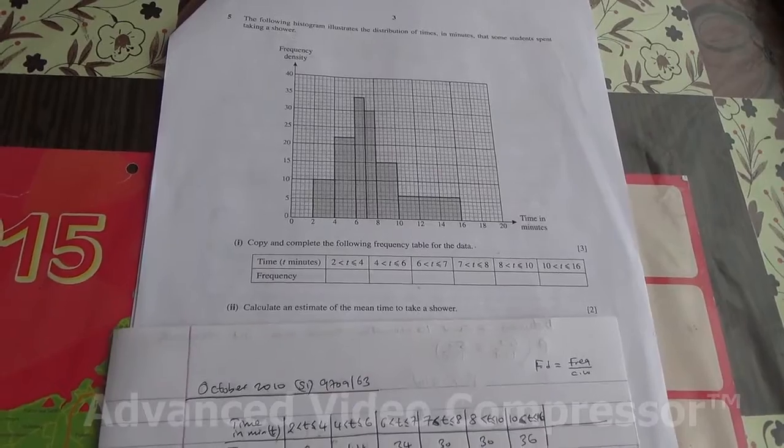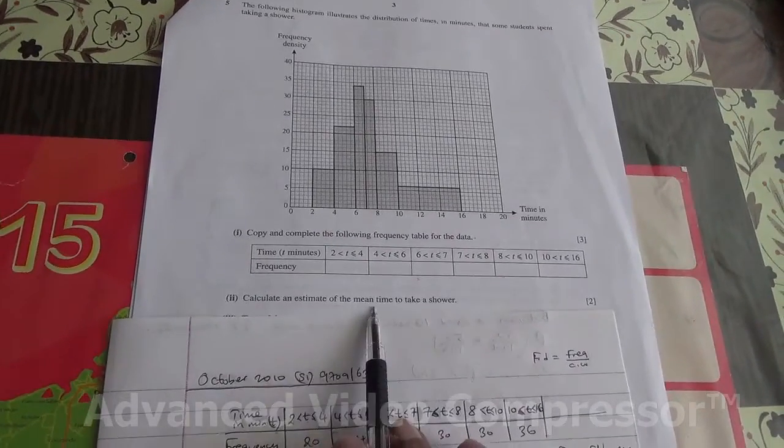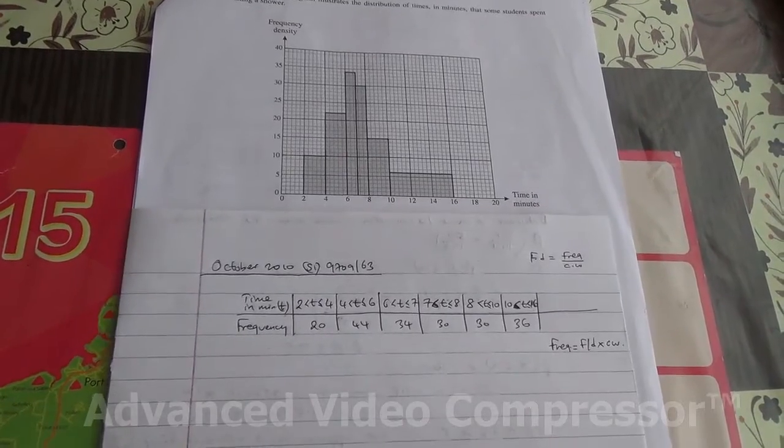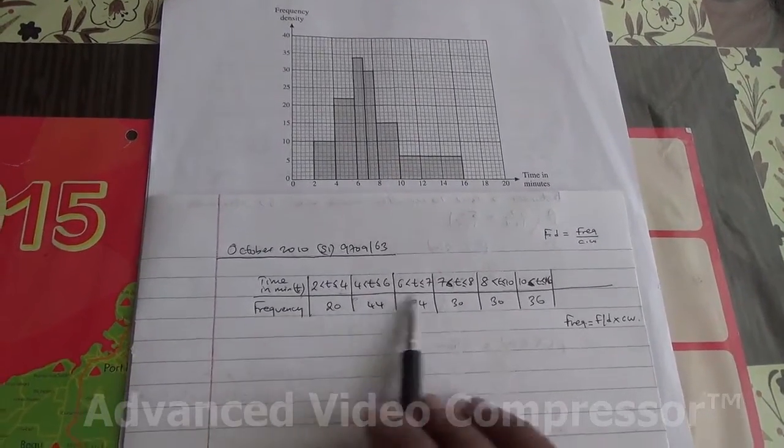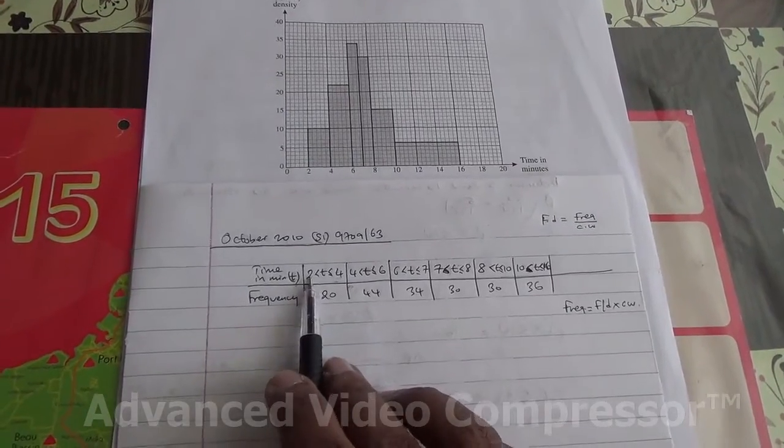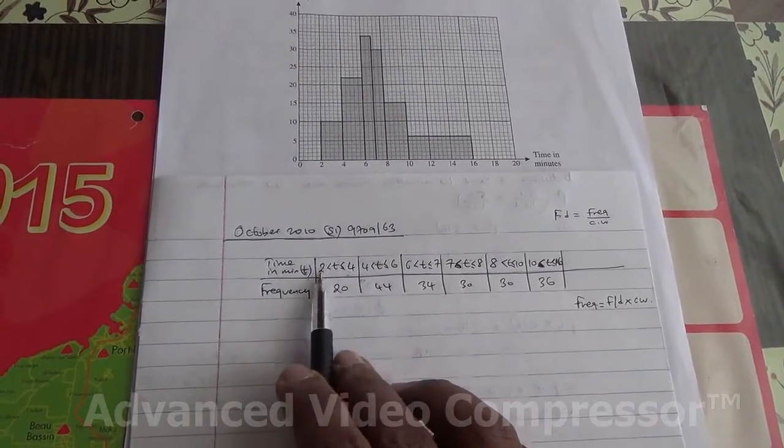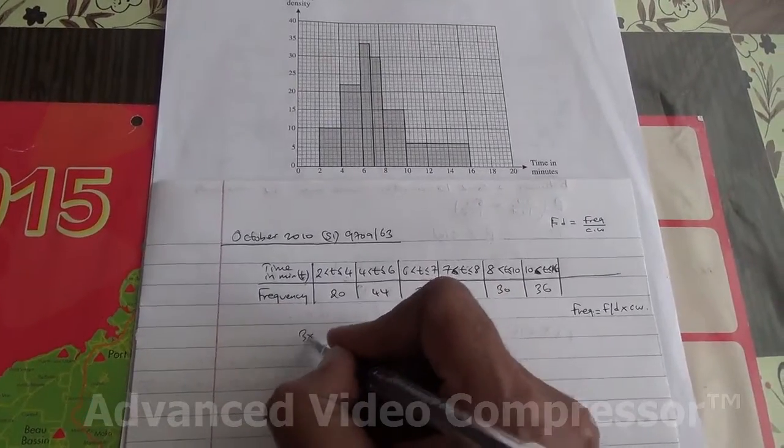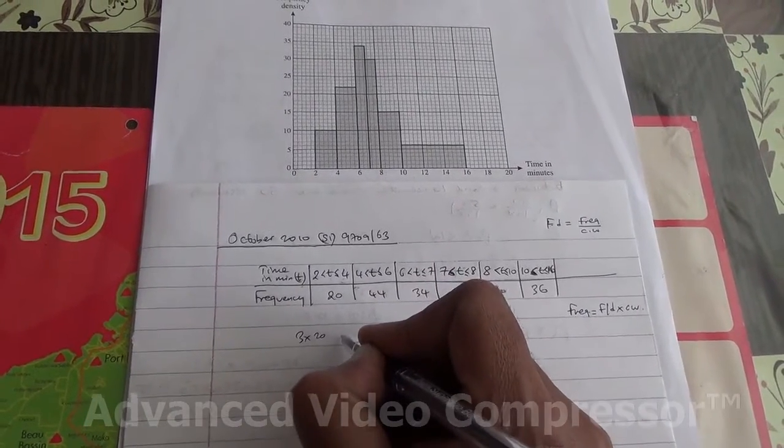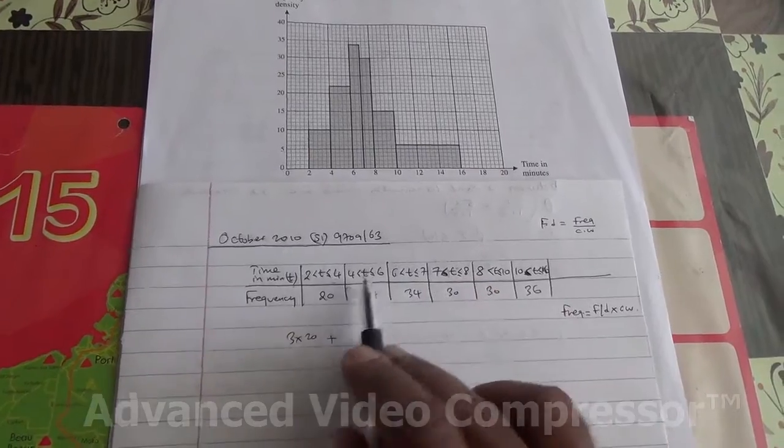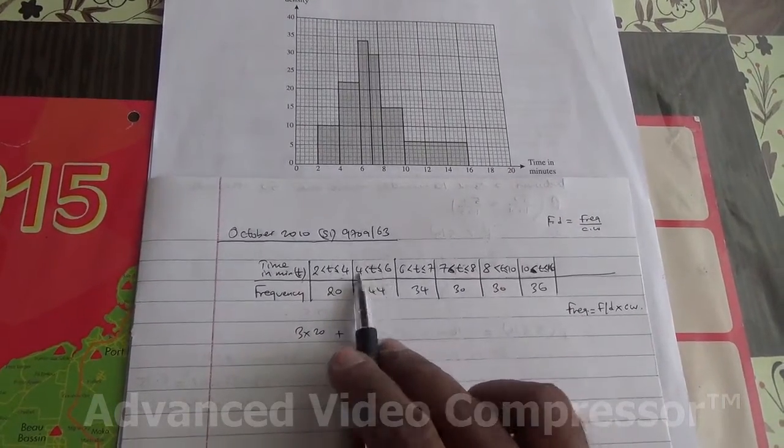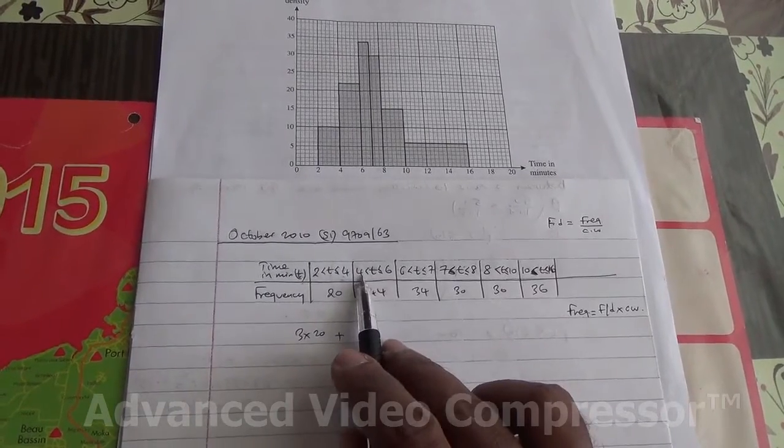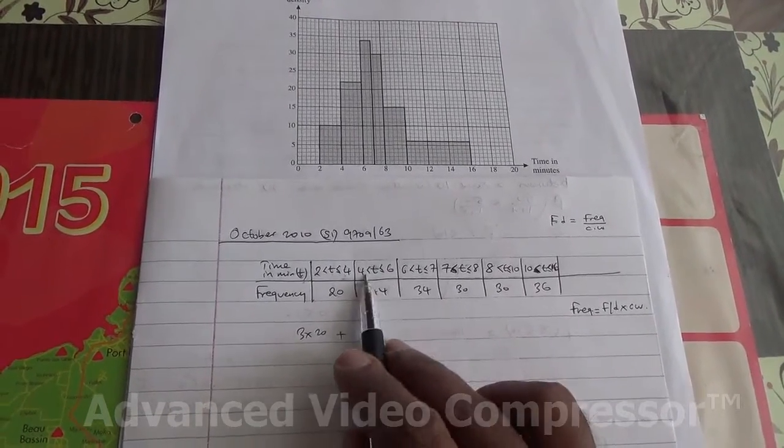The second part, we need to calculate an estimate of the mean time for the shower. Now for the mean time, you're going to take the midpoint of these times. The midpoint between 2 and 4 is 2 plus 4 divided by 2, which is 3, so you're going to get 3 times 20. Plus, 4 to 6, the midpoint is 4 plus 6 is 10, divided by 2 is 5. So 5 times 44.